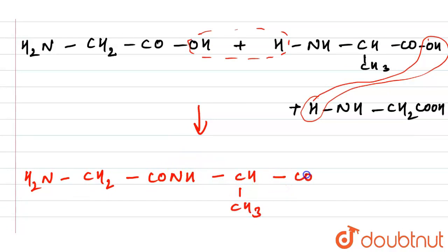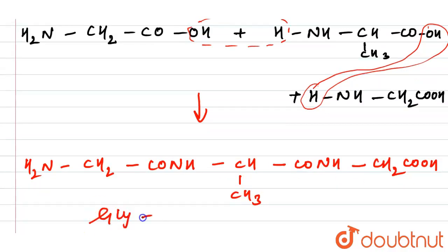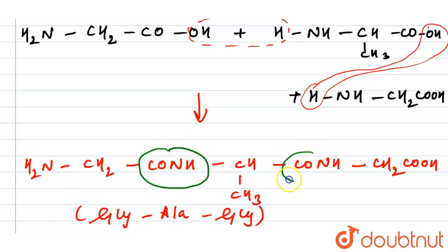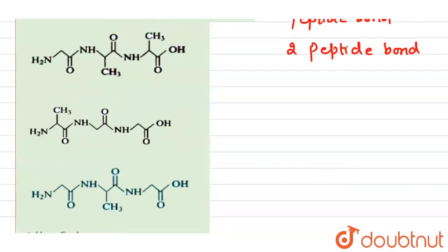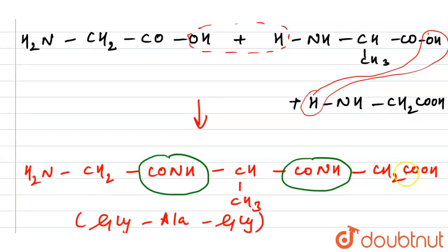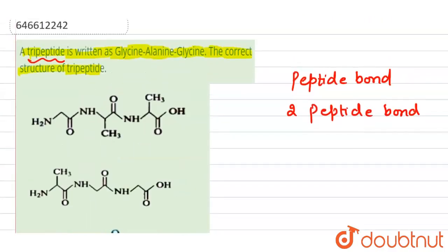We will have the CH3 group here from the alanine residue. So in the final tripeptide structure, we have only one CH3 group. Since the two glycine units do not have a CH3 group, the option showing more than one CH3 is incorrect.